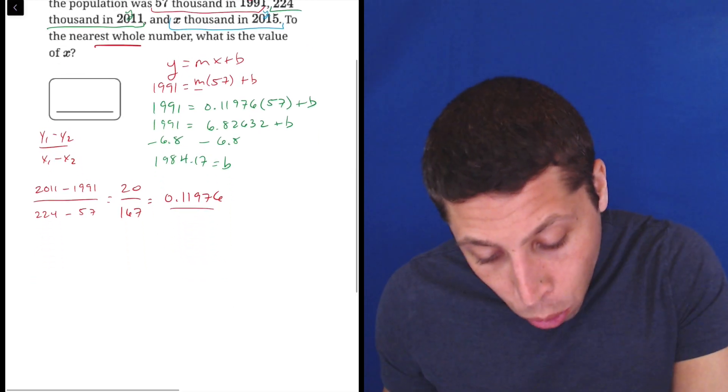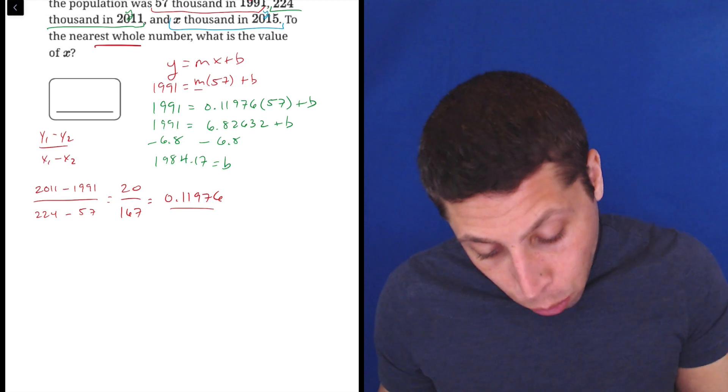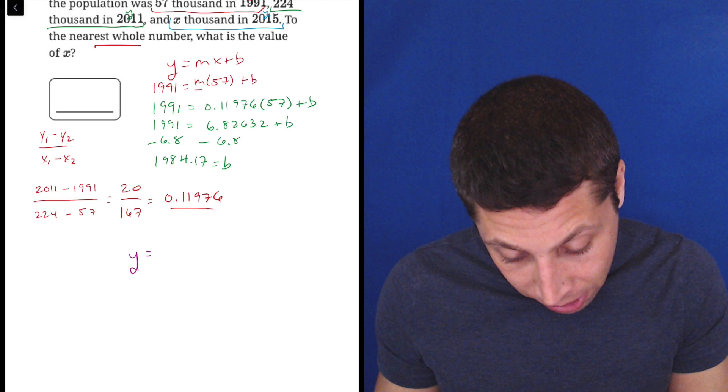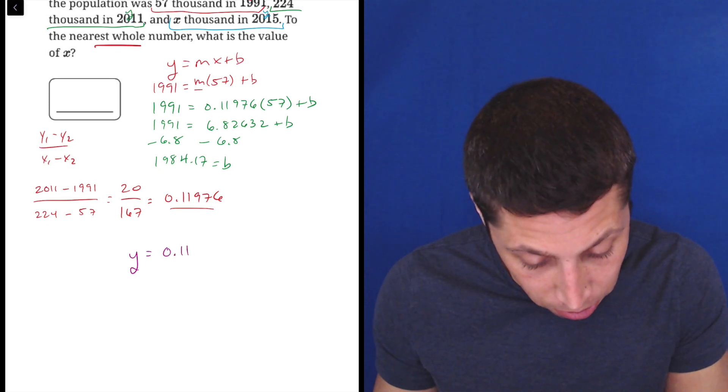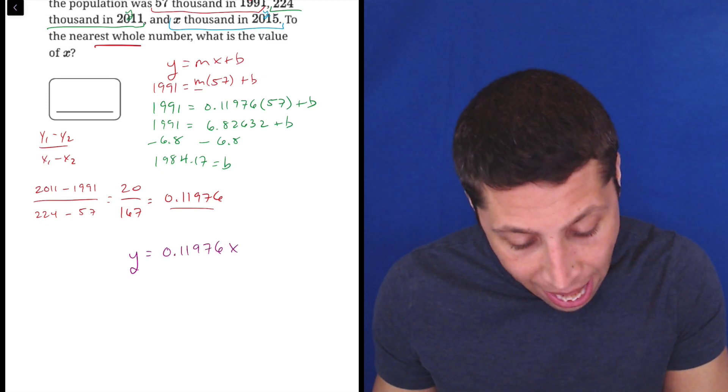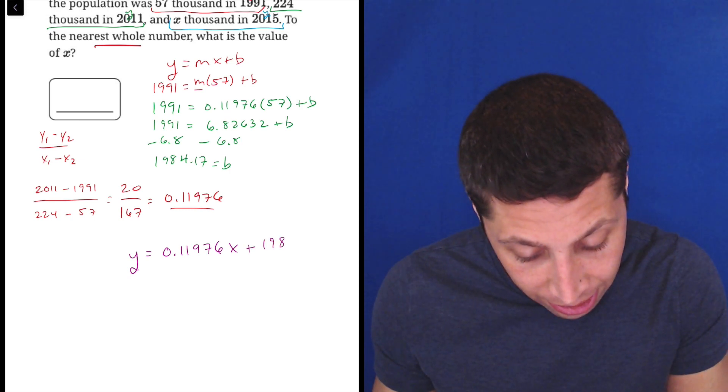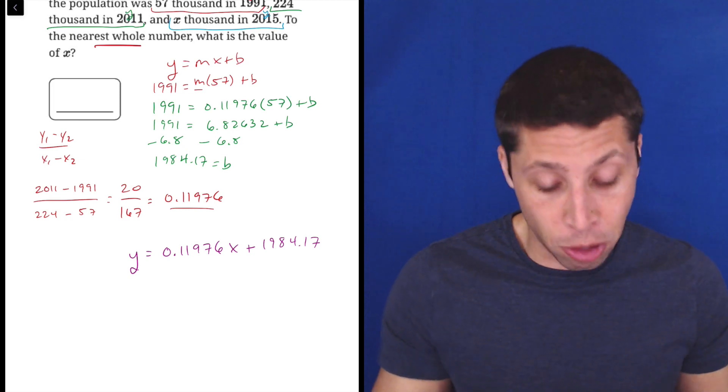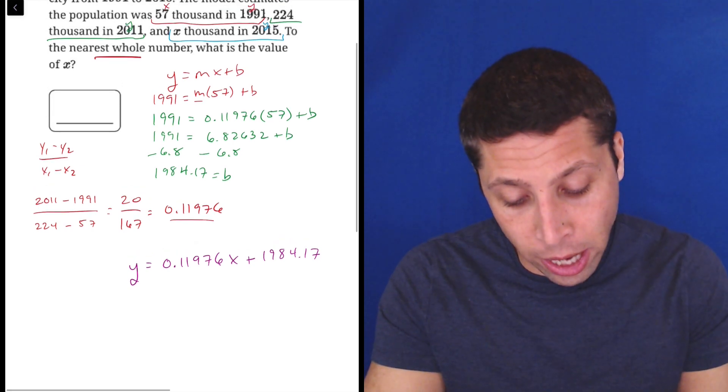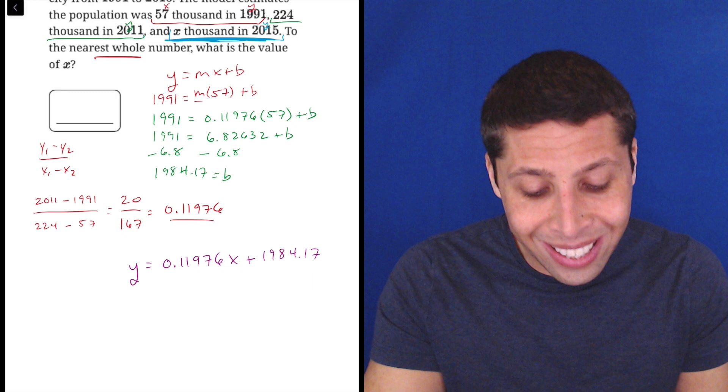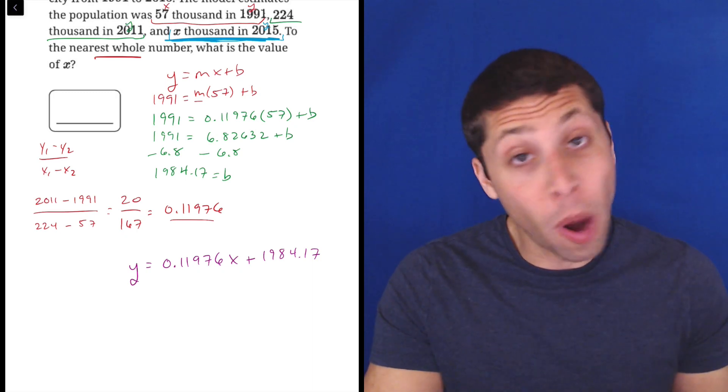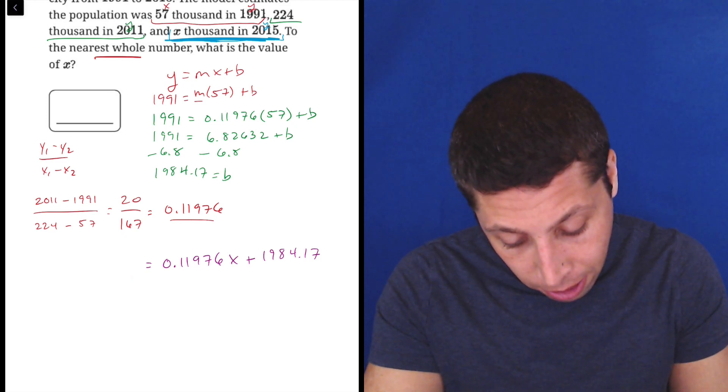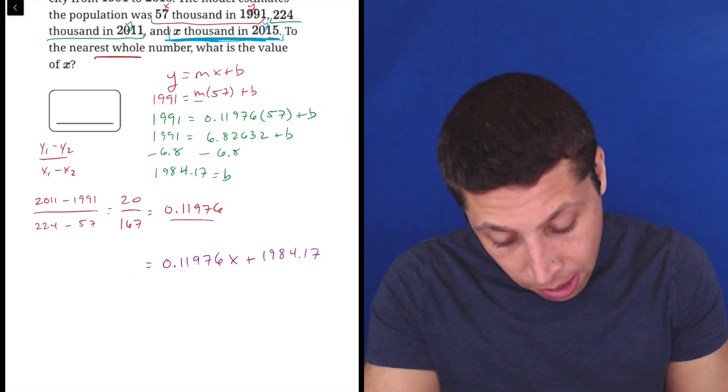What this got for me is the overall equation for this line. It is now known that it is y equals, so the slope we said was 0.11976, the x is the variable and the b is 1984.17. We could put that into Desmos if we wanted and continue the problem from there, but at this point I'm just going to follow my original strategy, plug points into equations. We still have another point. We know the y coordinate at that point. We don't know the x, but we can solve it just by plugging it in. So let's get rid of this y here and let's substitute in 2015.